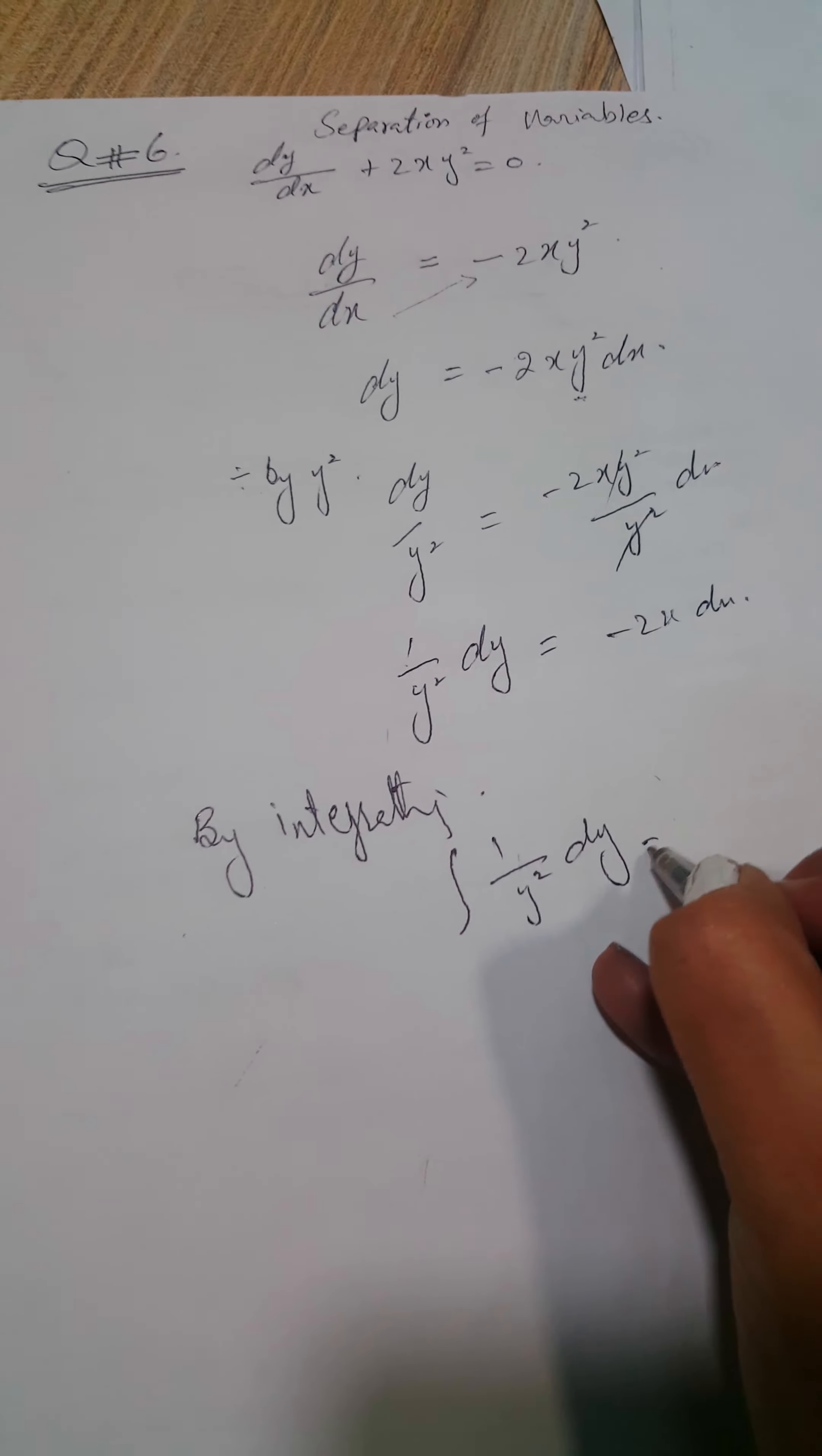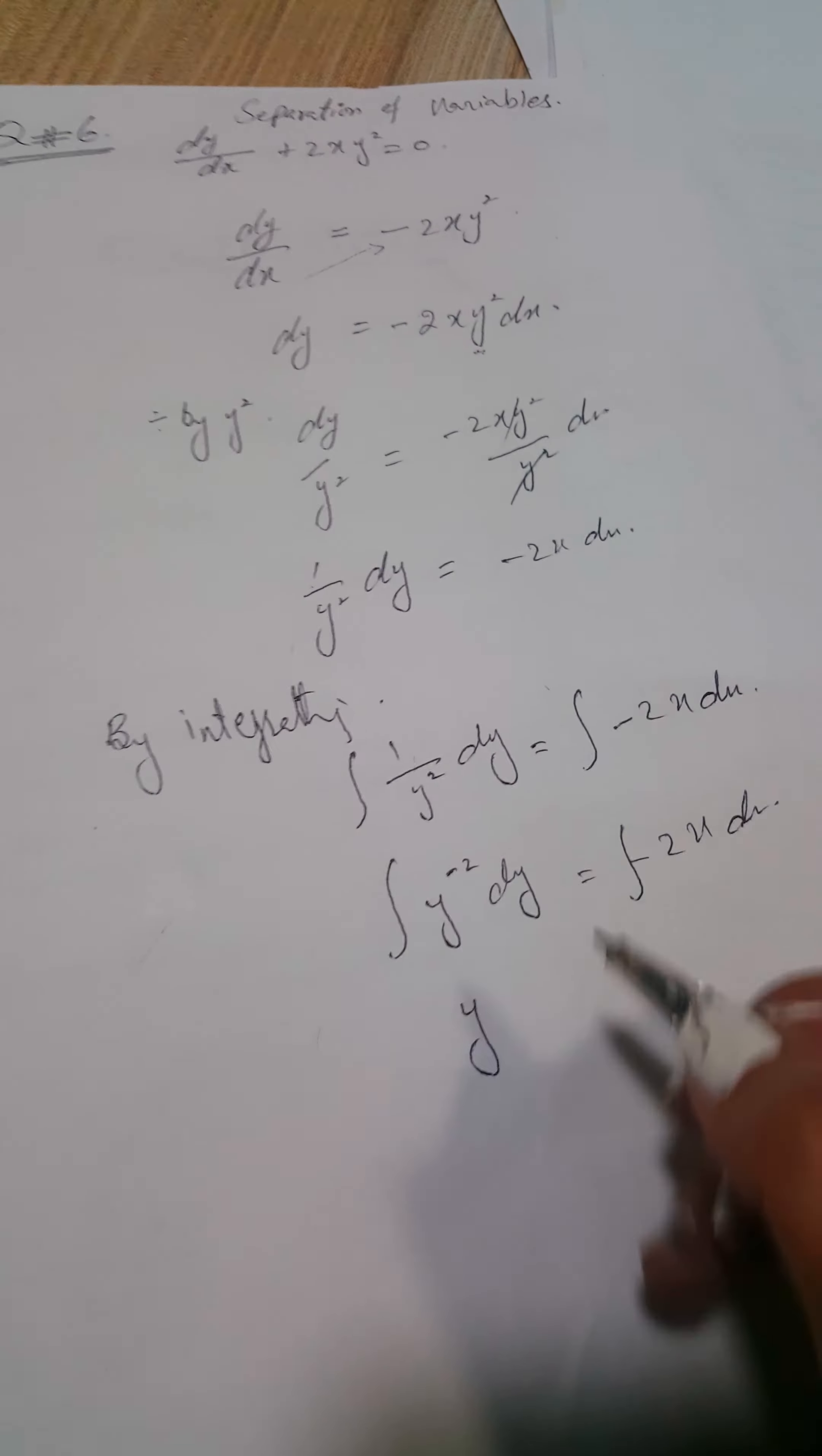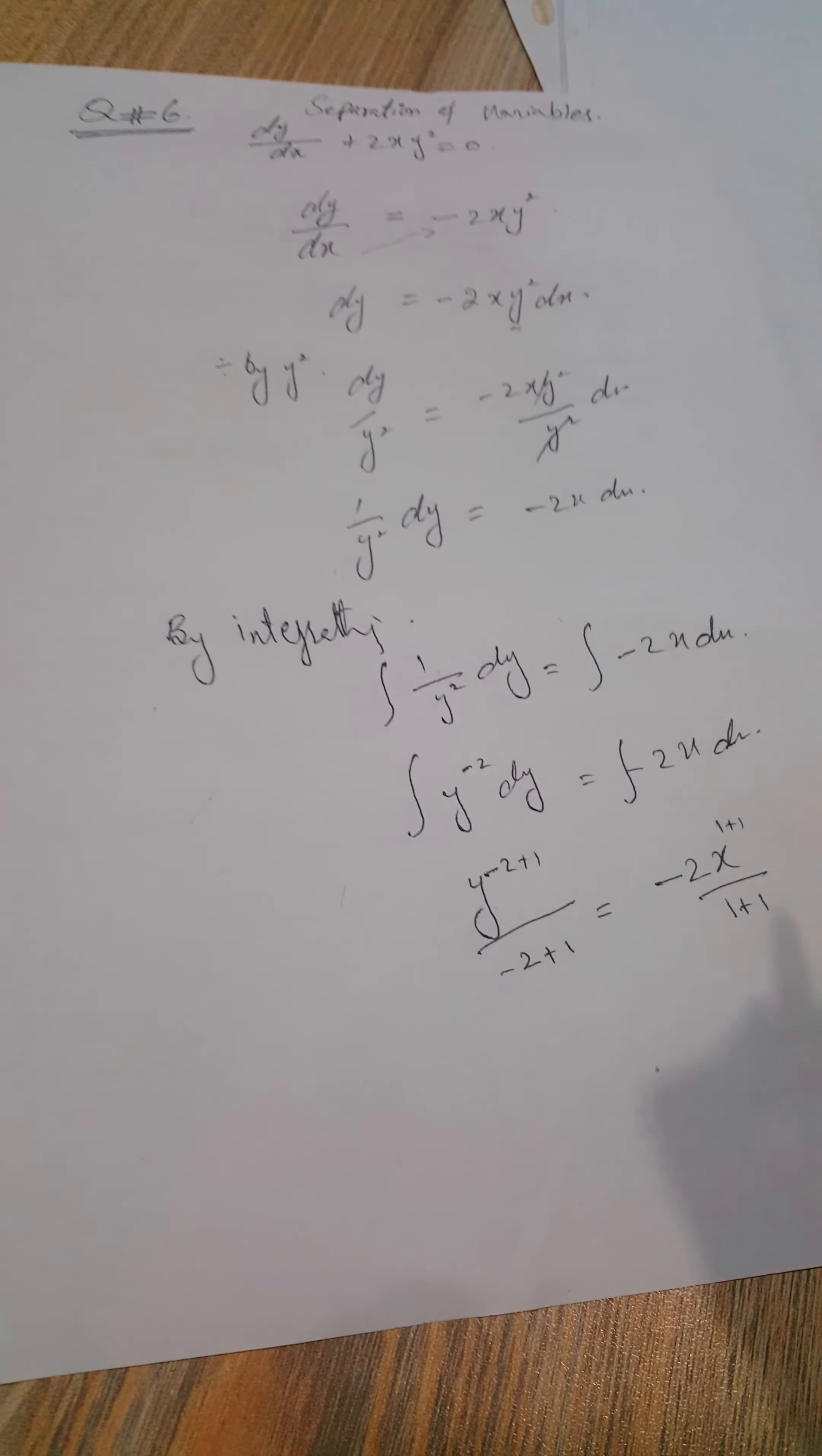Integration of y^(-2): y^(-2+1)/(-2+1) = -2x^(1+1)/(1+1). That is the formula of the integration. So y^(-1)/(-1) = -2x²/2 + constant.